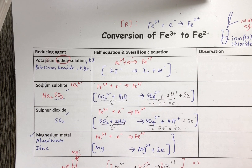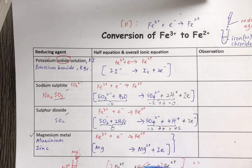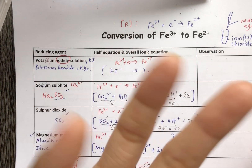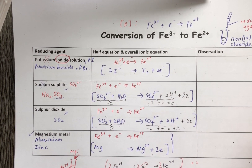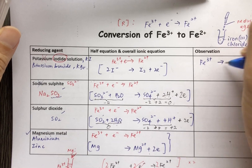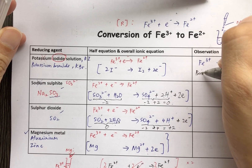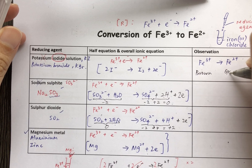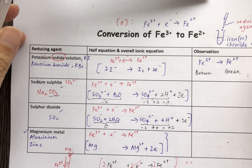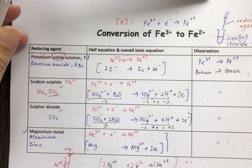Your homework today will be to practice writing the overall ionic equation for reactions 1, 2, and 3 — the fourth one has already been shown, so no need to do that. For observations: this reaction converts Fe3+ to Fe2+. Iron 3 is a brown solution and iron 2 is a green solution, so you will see a color change from brown to green in all cases.